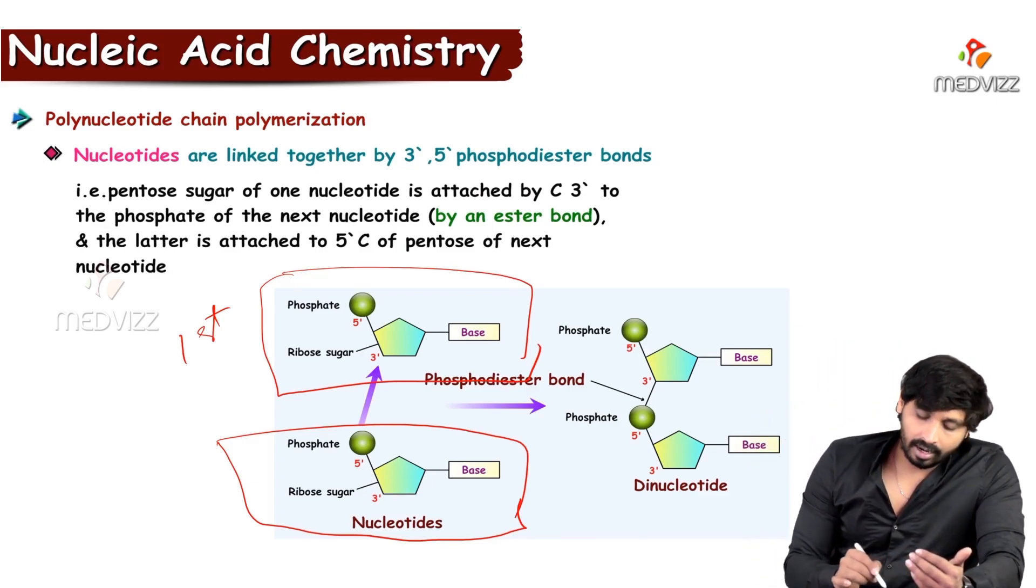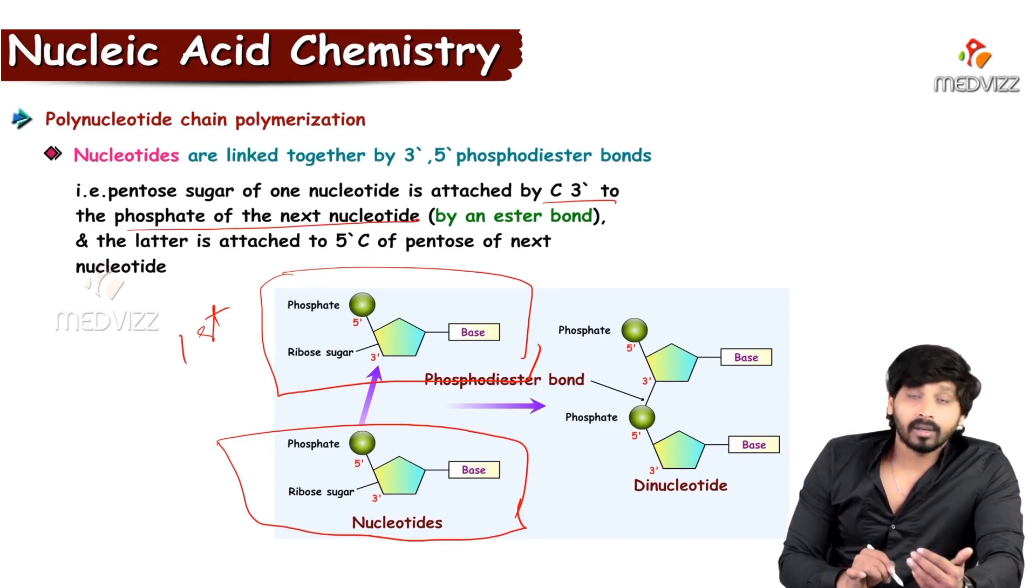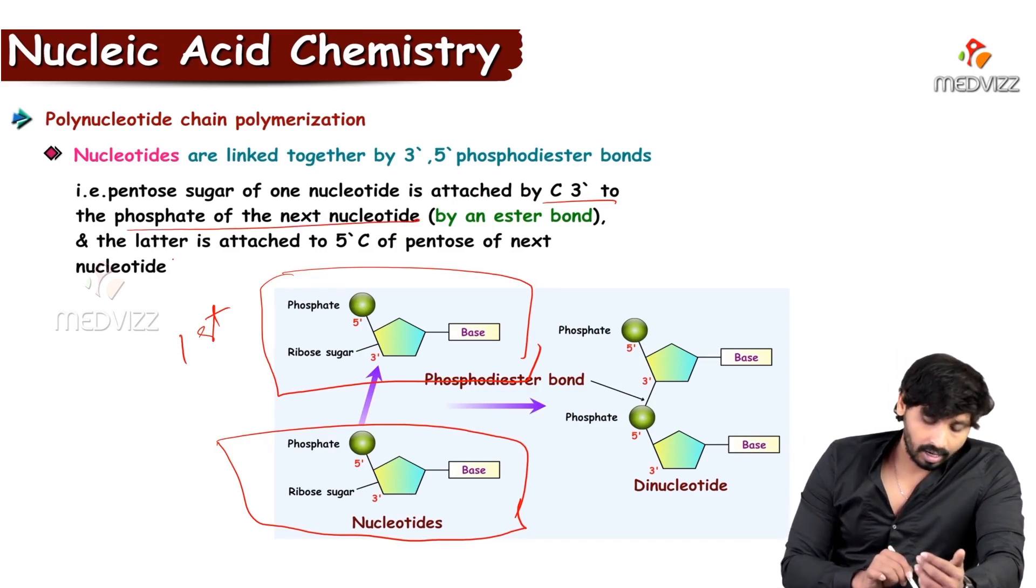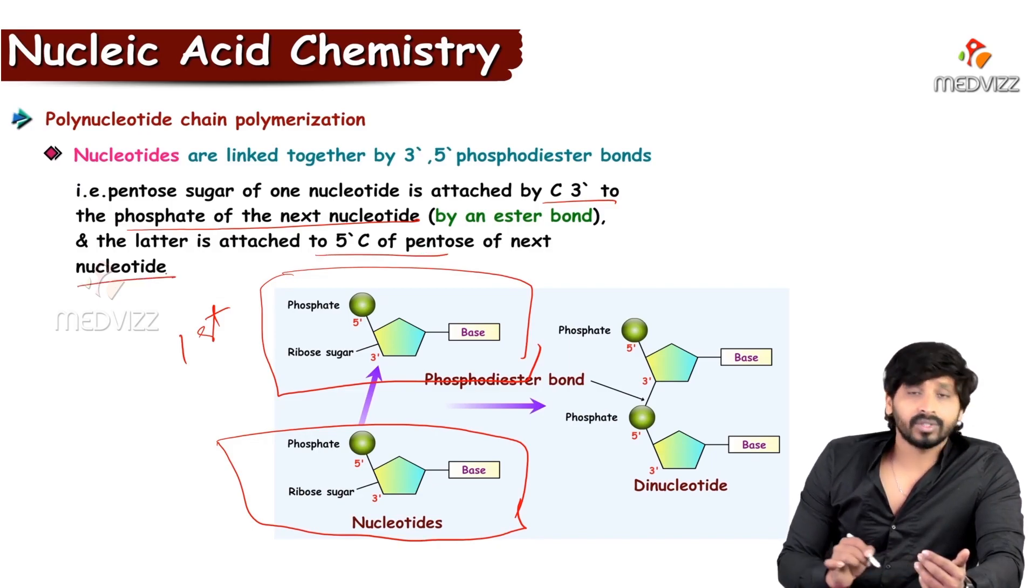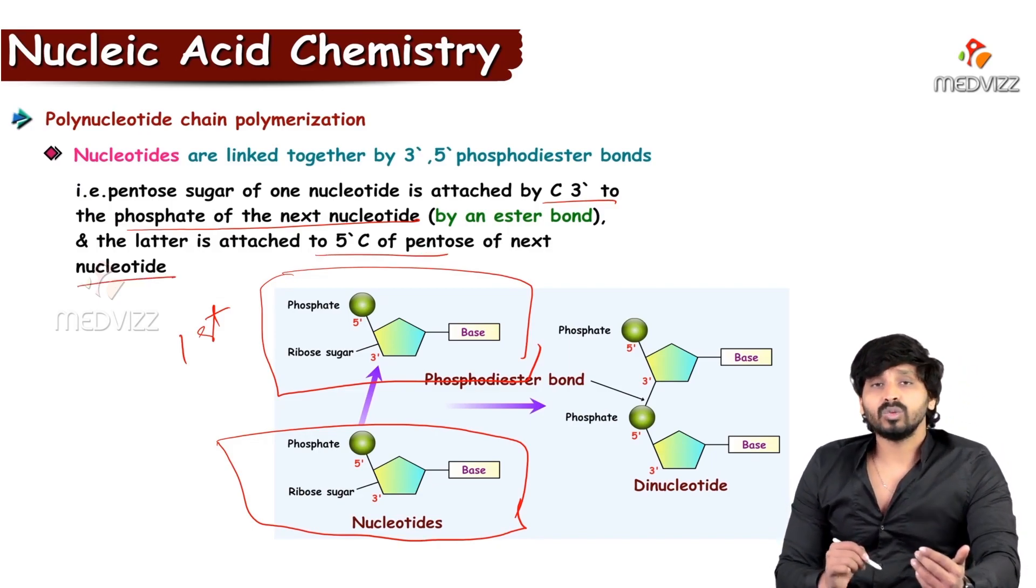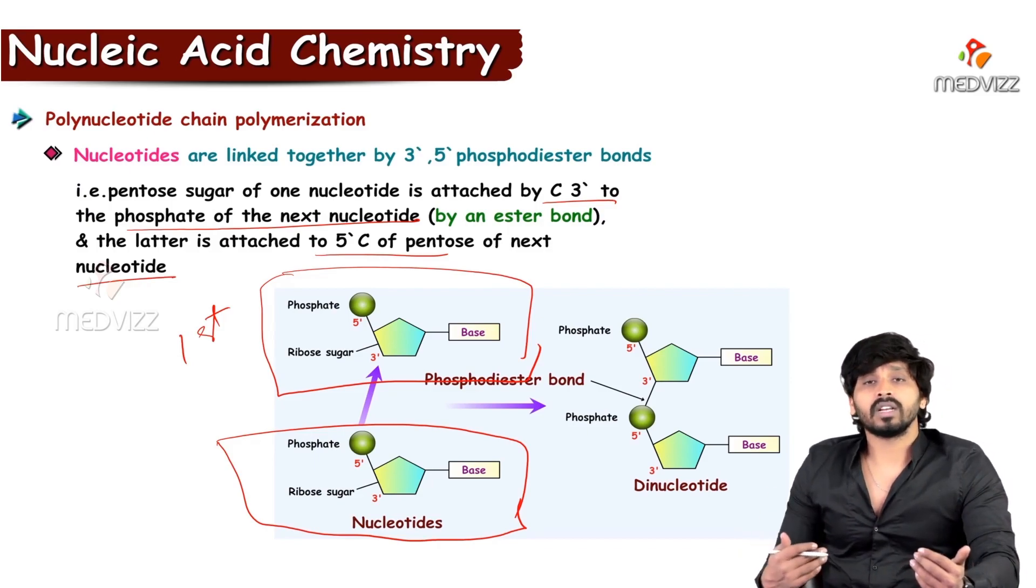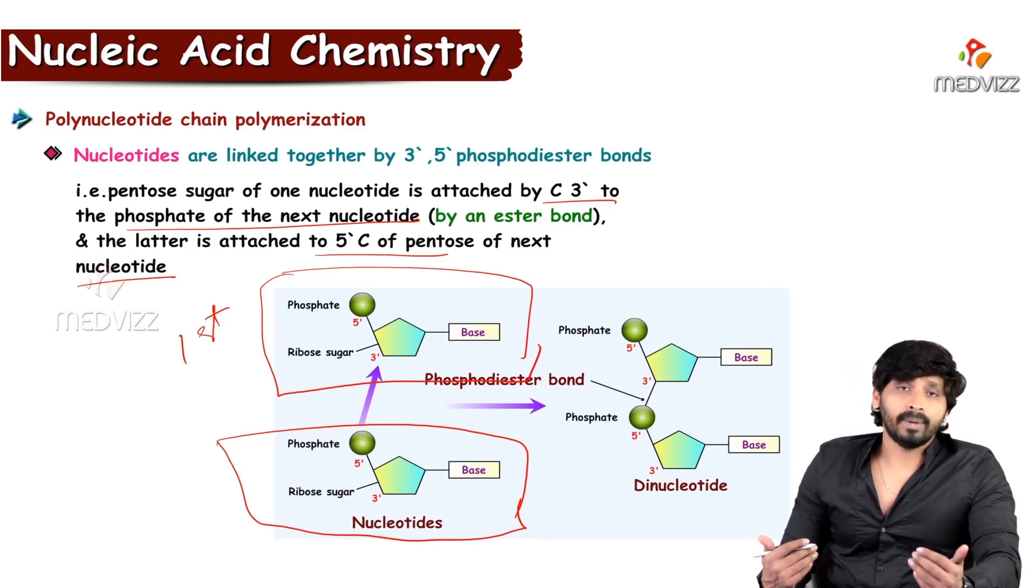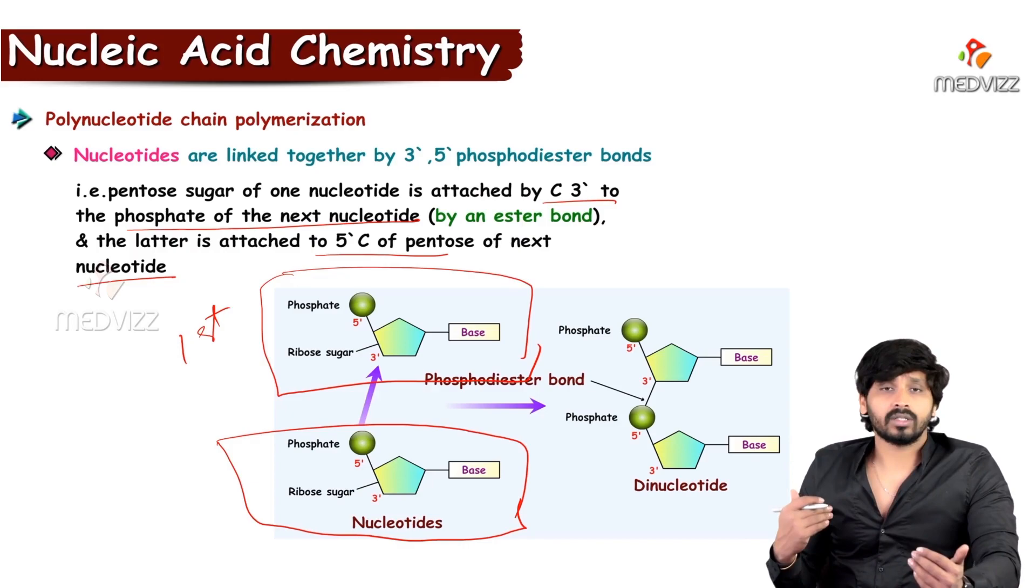Pentose sugar of nucleotide attached by C3 to the phosphate of next nucleotide by phosphodiester bond, and the latter is attached to the 5' carbon of pentose of next nucleotide. This way, these phosphodiester linkages happen in between the nucleotides.